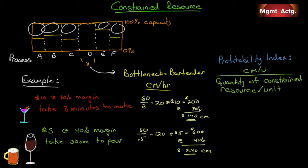If you were the owner of the bar, you'd turn it into a beer and wine bar, because those fancy drinks just take too long to make. To avoid going through this long process every time, we can use something called the profitability index. It's simply a division of two things: contribution margin per unit divided by how much time it takes of the constrained resource — the bartender's time per unit.